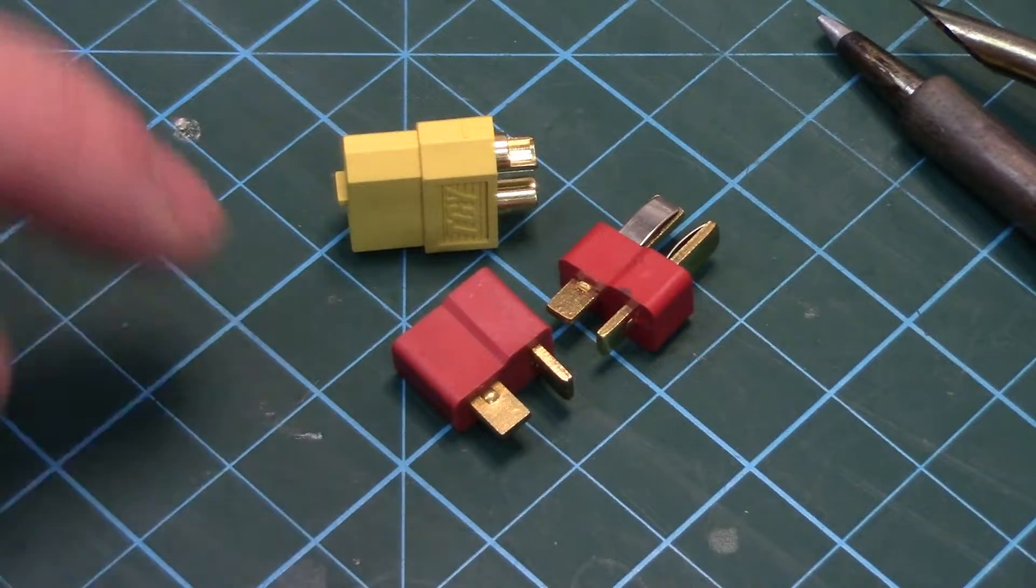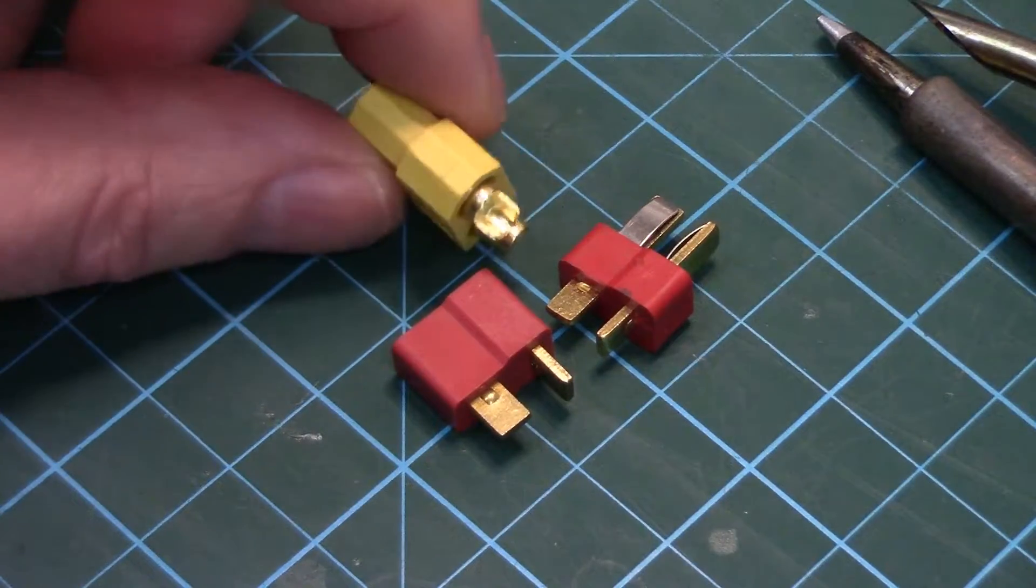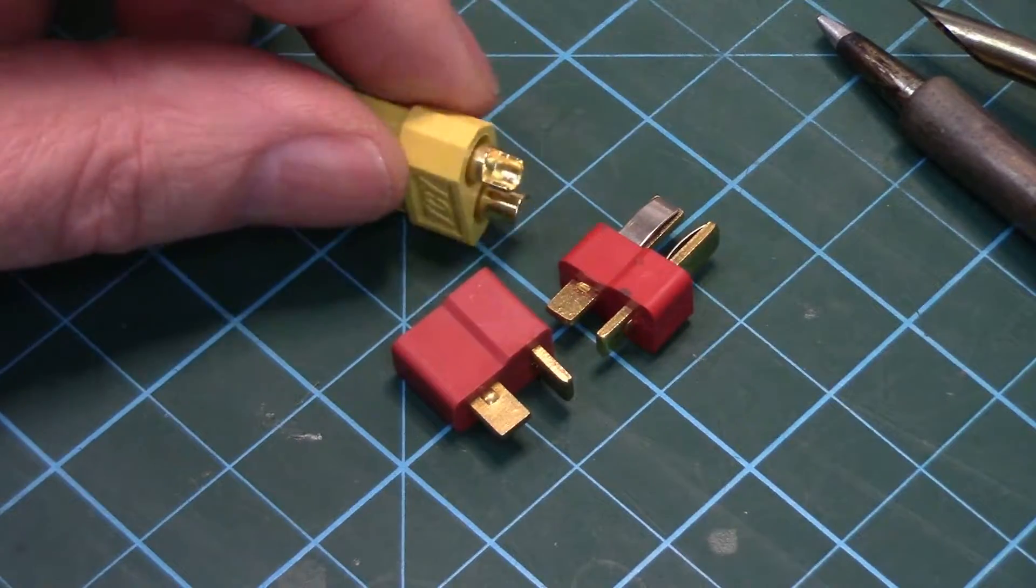I'm going to show you how that's achieved with XT60s. These are in a nylon housing which have a much higher melting point, so these aren't quite as difficult in that respect.